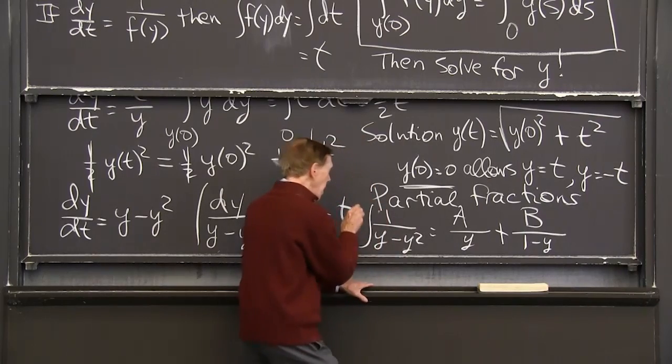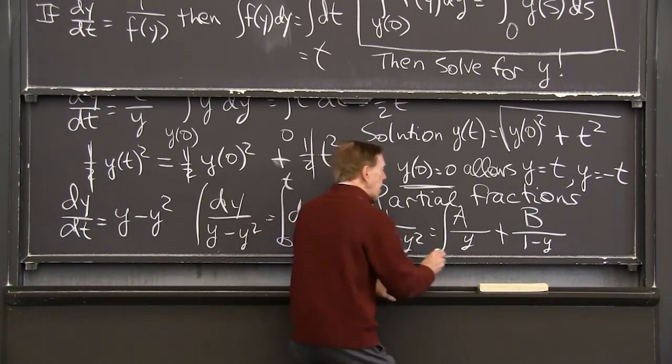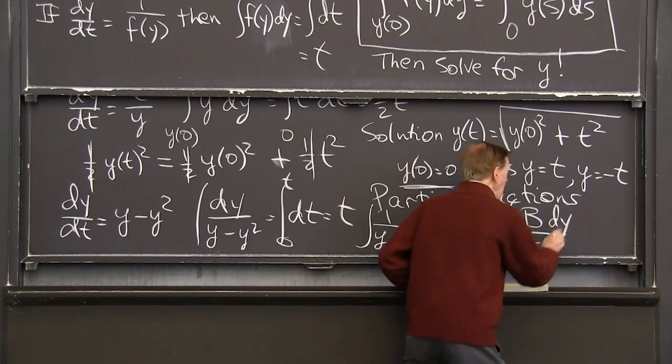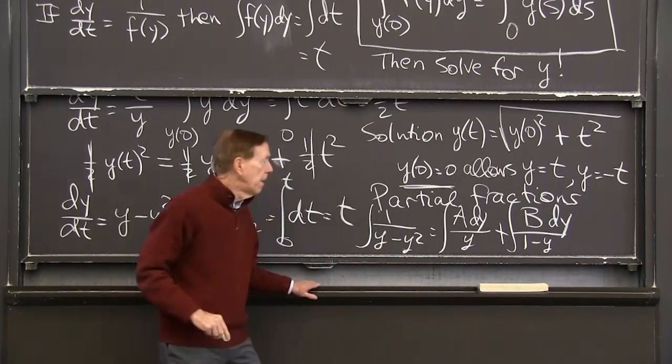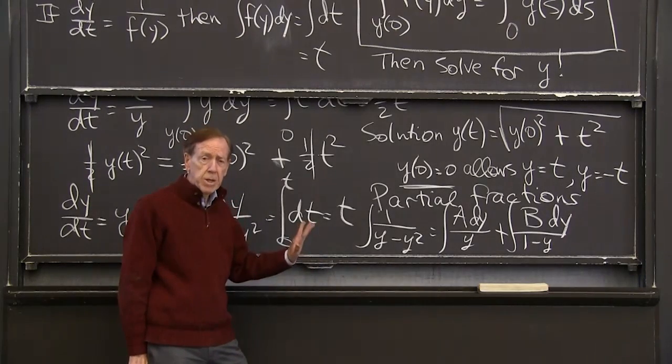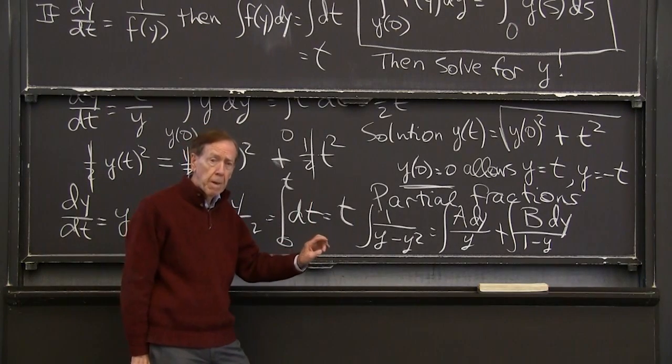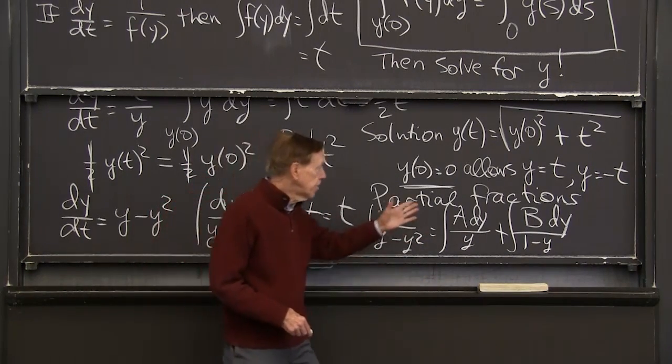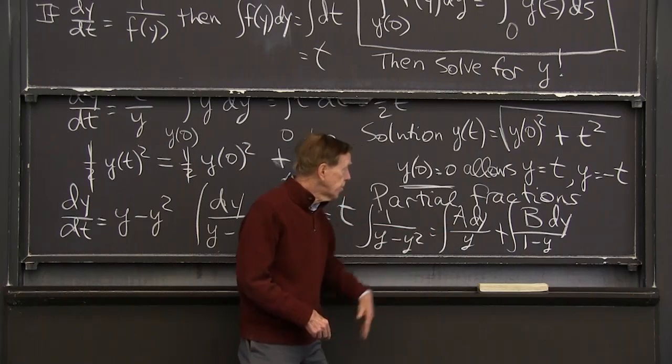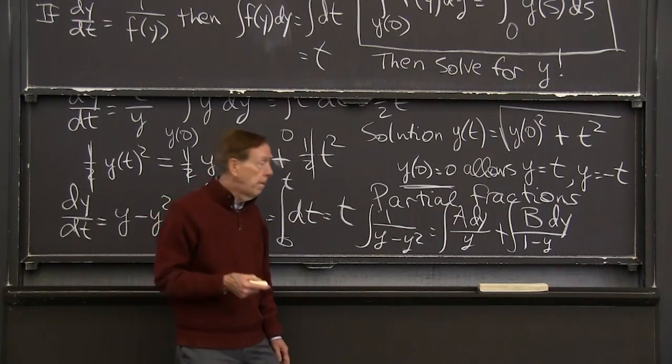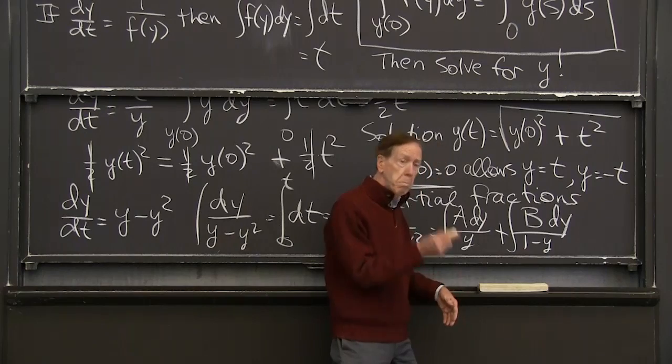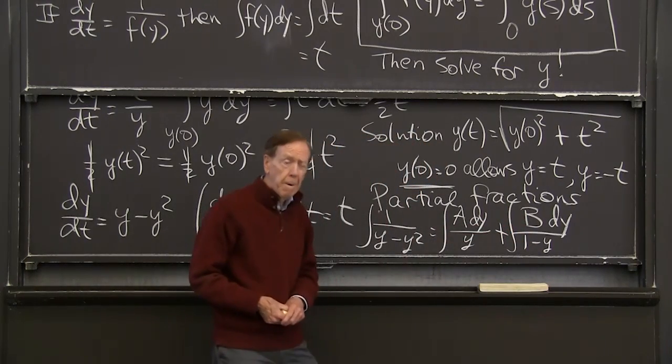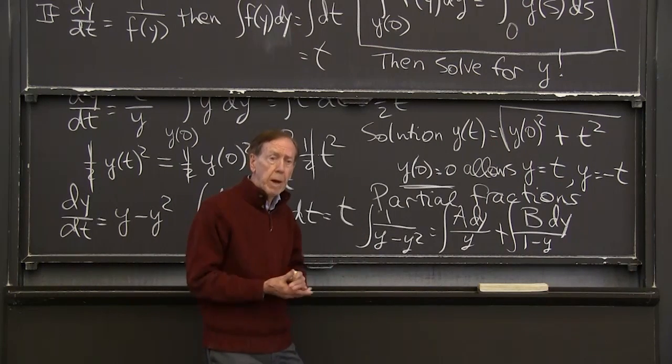So I factored the y minus y squared into these two terms. You'll see that if I come to a common denominator, if I put these two fractions together, then the denominator is going to be that. And the numerator, if I choose a and b correctly, will be 1. So integrating this, I can separately integrate a over y dy and b dy over 1 minus y. And those are easy. So partial fractions, after you go to the effort of finding the fractions, then you have separate integrations that you can do.